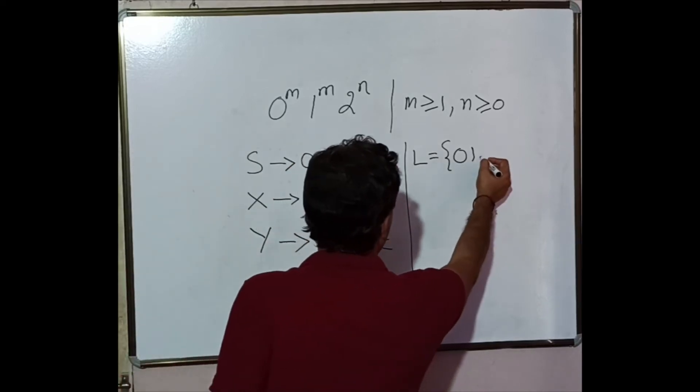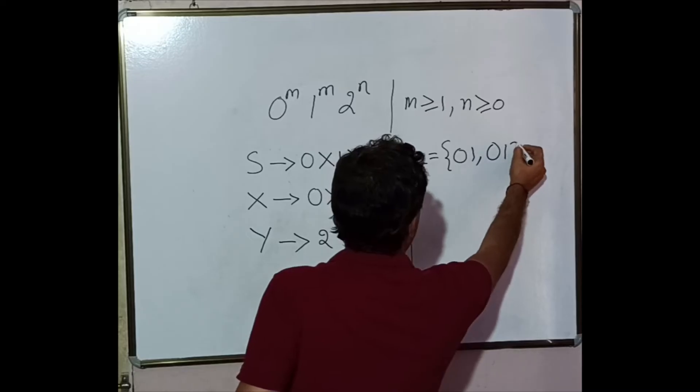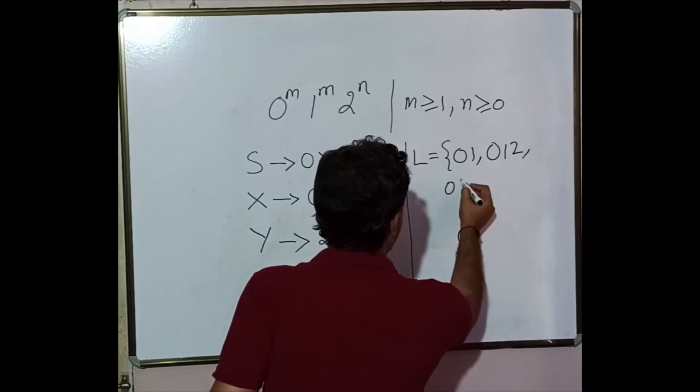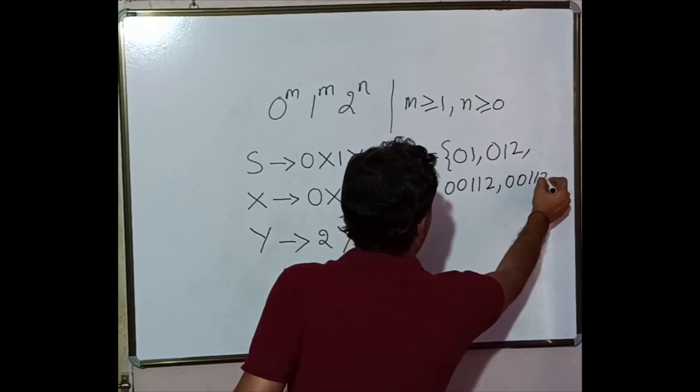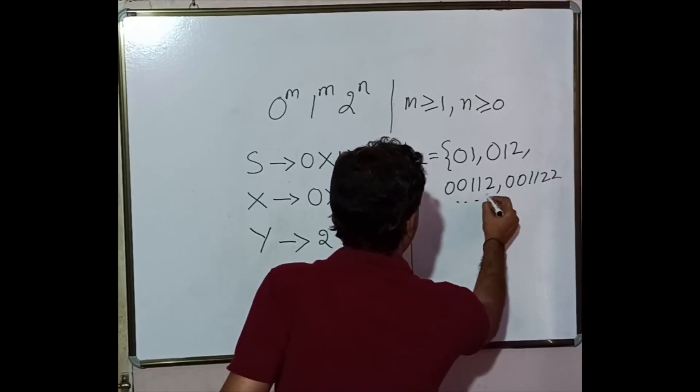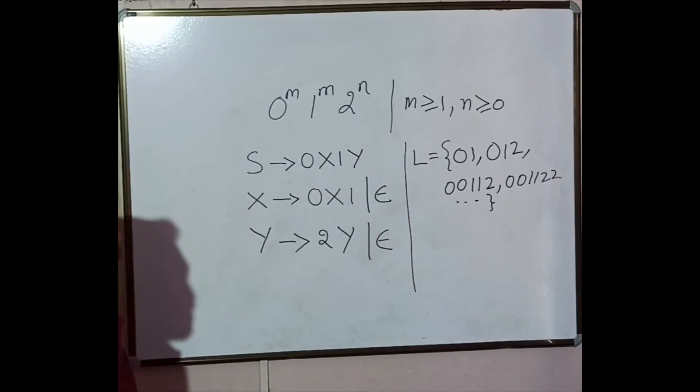That is 0, 1. Next 0, 1, 2. Next 0, 0, 1, 1, 2. Next 0, 0, 1, 1, 2, 2. And so on.